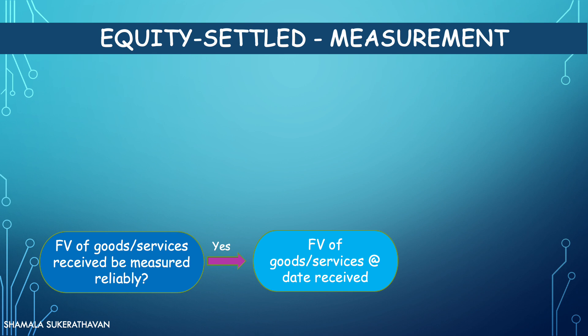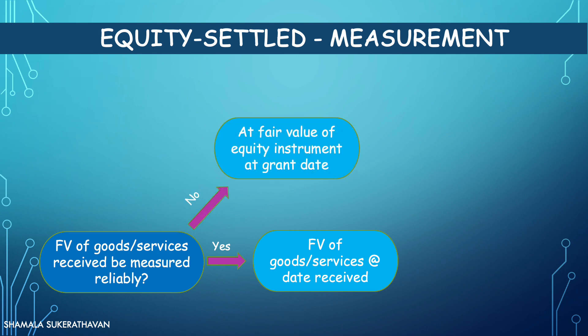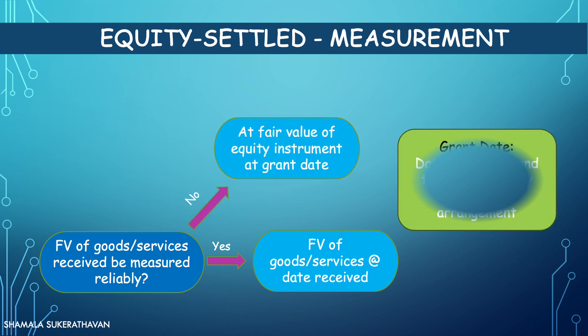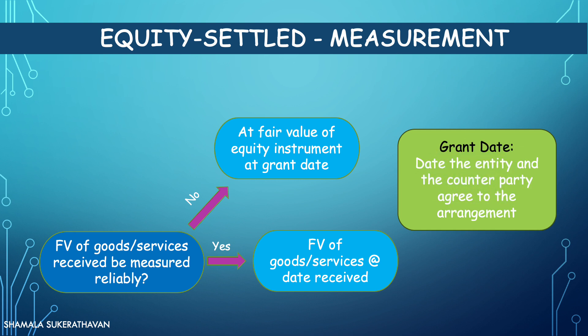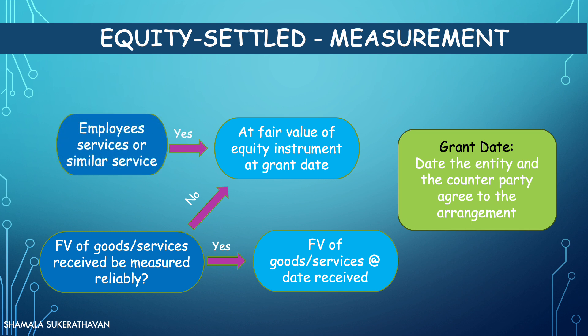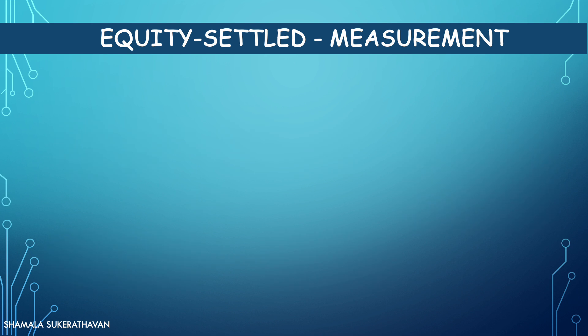However, if the fair value of the goods or services received cannot be estimated reliably, the transaction is measured at the fair value of the equity instrument at grant date — that being the date at which the entity and the counterparty agree to the share-based payment transaction. This would also be the case for transactions with employees or others providing similar services, given typically it is not possible to measure the fair value of the services rendered reliably.